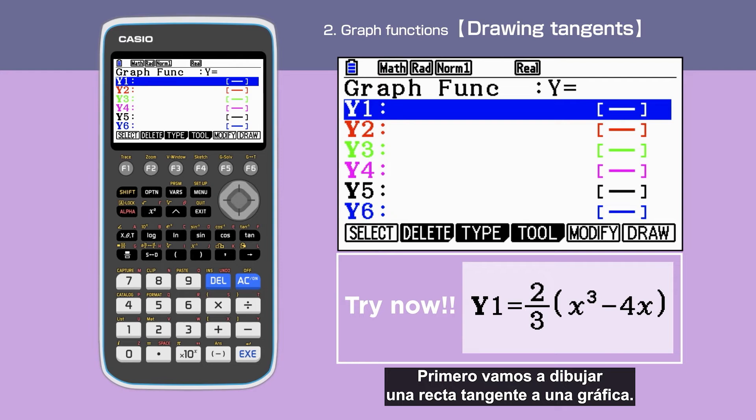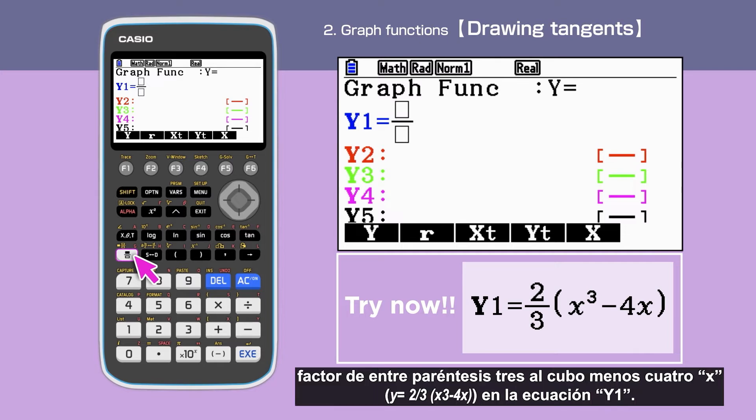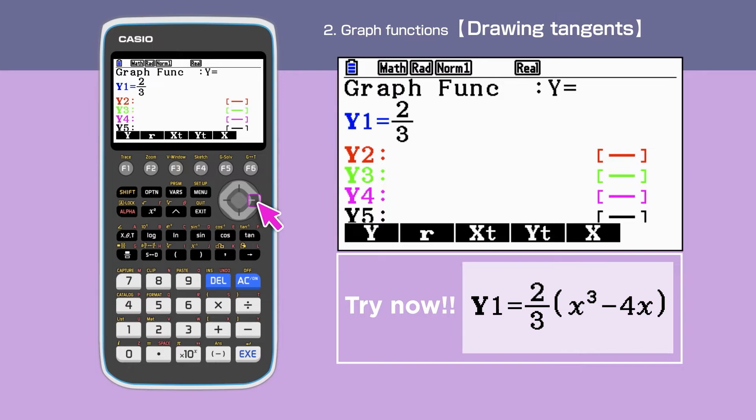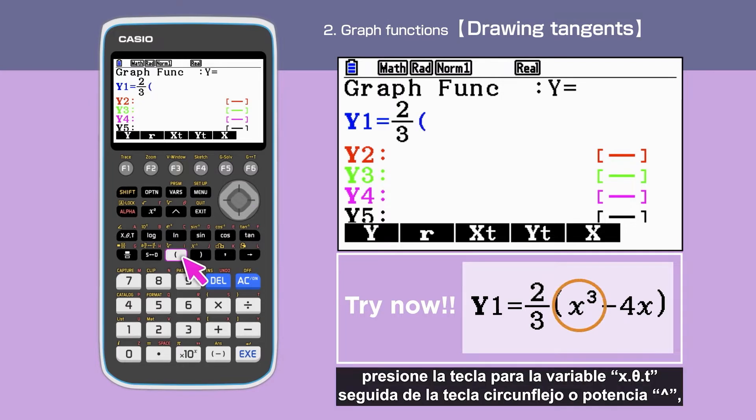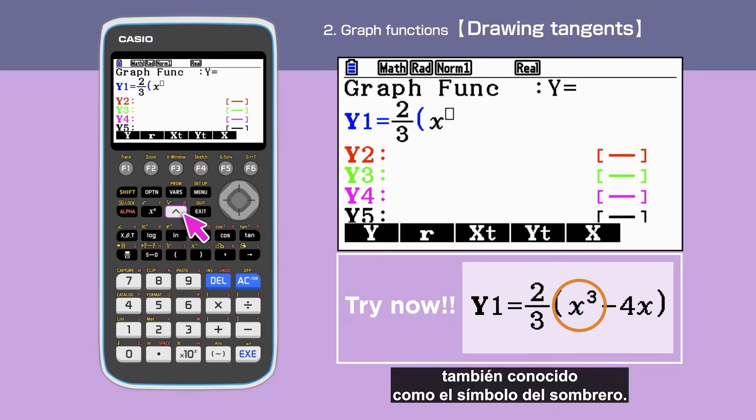First, we will draw a tangent to a graph. Check that the Graph Function shows y equals, then enter the equation y equals 2 over 3 bracket x cubed minus 4x in y1. In order to enter x cubed, we press x followed by the circumflex key, also known as a caret symbol or hat symbol.